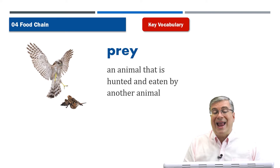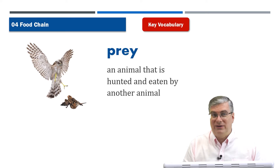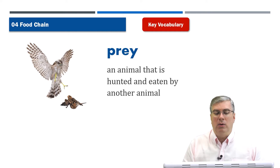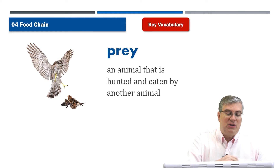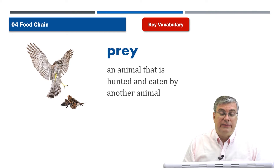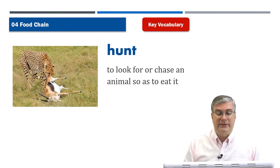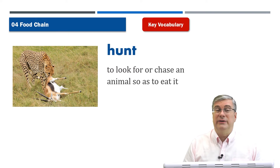So an owl is a predator animal, and the prey is what the owl eats. Prey is an animal that is hunted and eaten by another animal. In this picture the smaller bird is the prey. That's nature.